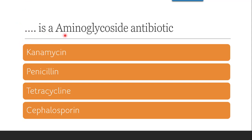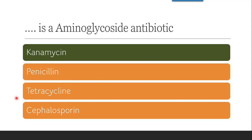The next question is: which is an aminoglycoside antibiotic? Aminoglycoside antibiotics are a class that includes streptomycin, gentamicin, neomycin, kanamycin, and amikacin. Among the options given, the correct answer is kanamycin. Penicillin is beta-lactam; tetracycline belongs to the tetracycline class; cephalosporin is another beta-lactam class. There are mnemonic tricks to remember the exact classification accurately. So the aminoglycoside antibiotic is kanamycin, with others being streptomycin, neomycin, amikacin, and gentamicin.